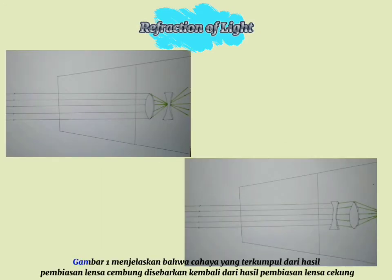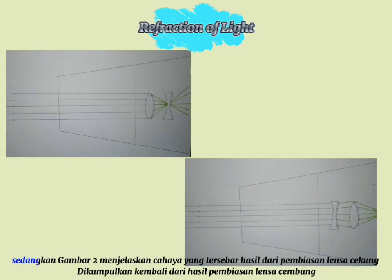The first image explains that the light collected from the refraction of the convex lens is scattered back from the reflection of the convex lens. The second image explains that the scattered light from the refraction of the convex lens is collected back from the reflection of the convex lens.